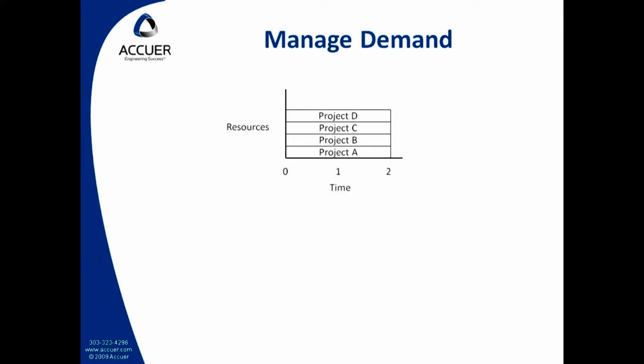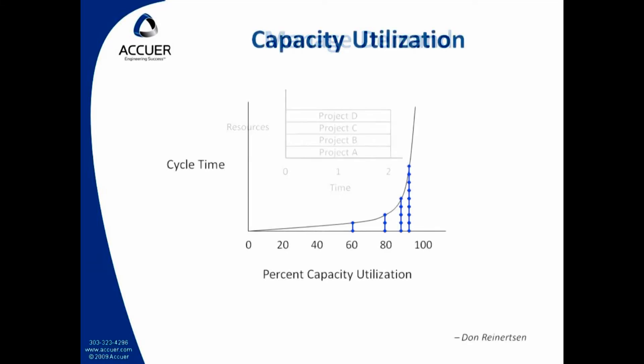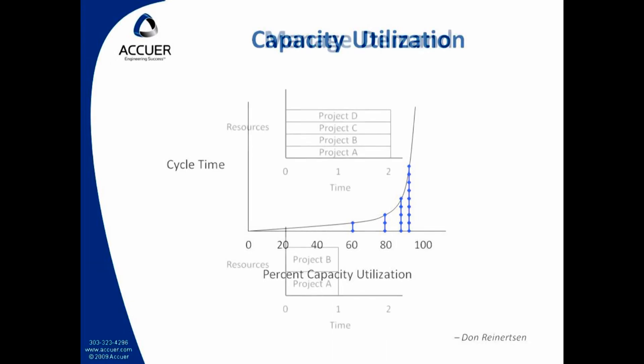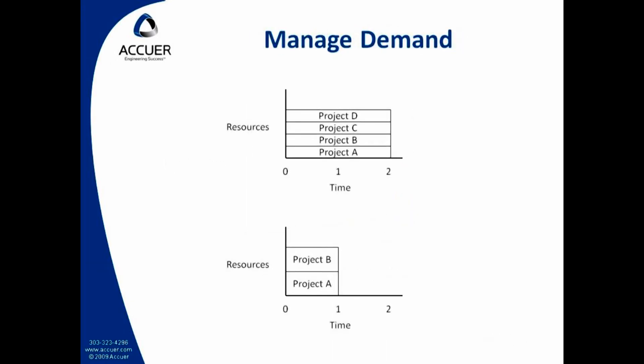What would happen if we delayed two of them and put all of the resources on the other two? I know I said delay, but stick with me here. Wouldn't that decrease my capacity utilization of the resources by 50%? Now, think back to that capacity utilization curve — wouldn't that cut my cycle time by a whole lot? Depending on where we were on the graph, it should cut it by way more than 50%. But let's assume we have work like life cycle testing that can't be compressed, so we only finish these projects in half the time.